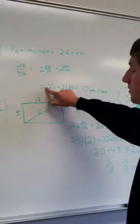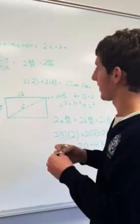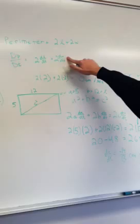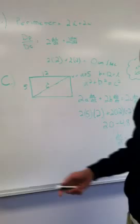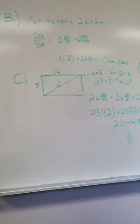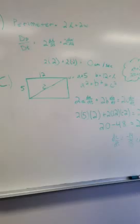Now you plug in the numbers. dL/dt is the rate of change for the length, which is negative 2, and dW/dt is positive 2. You do 2 times negative 2 plus 2 times positive 2, and it equals 0 centimeters per second, which means the perimeter doesn't change, because the width increases by 2 while the length decreases by 2.